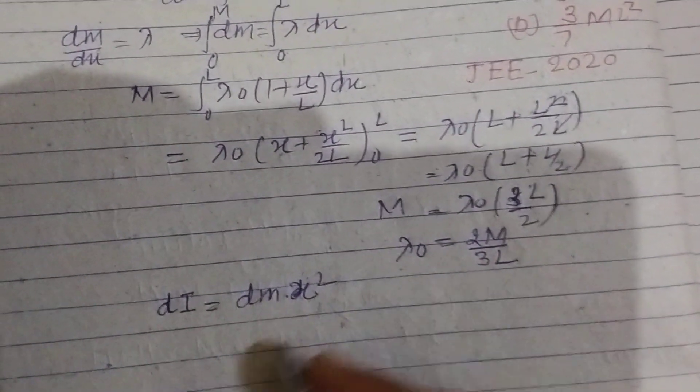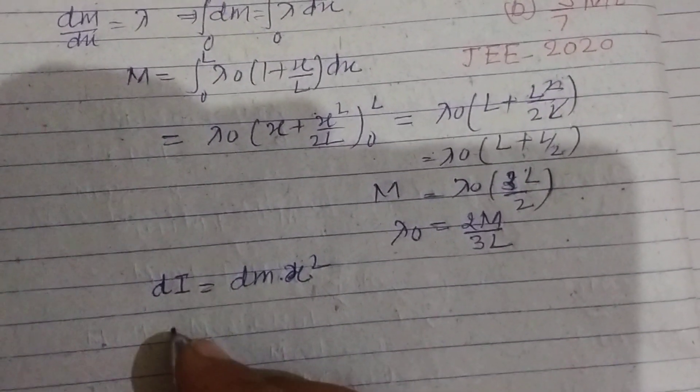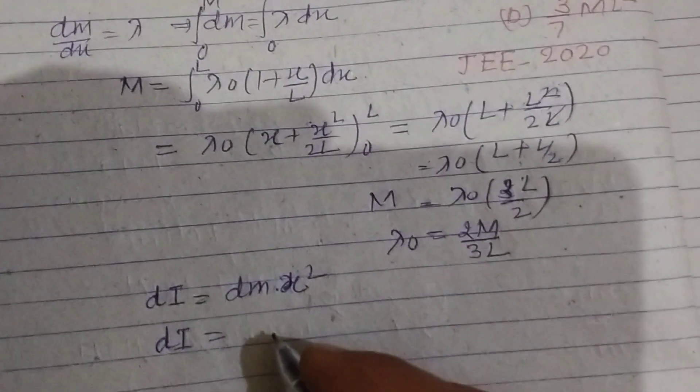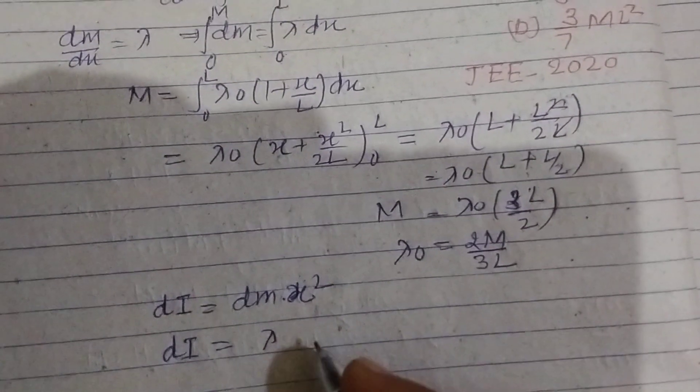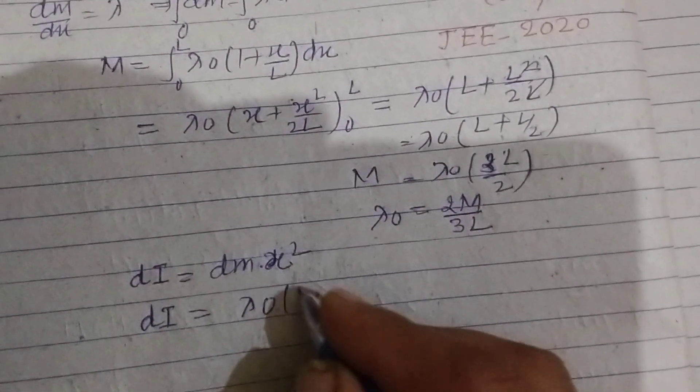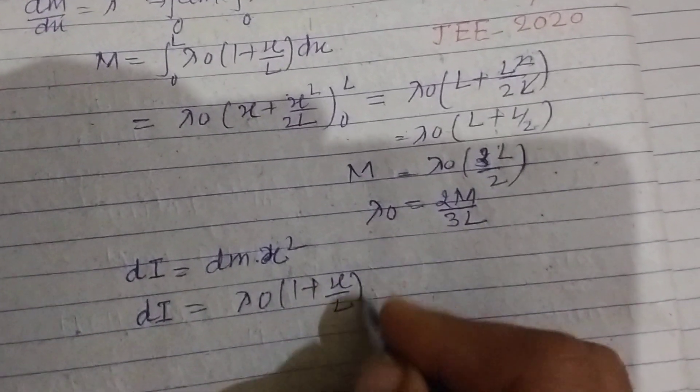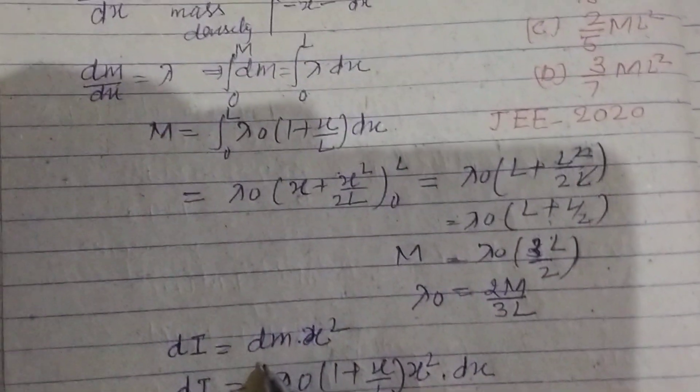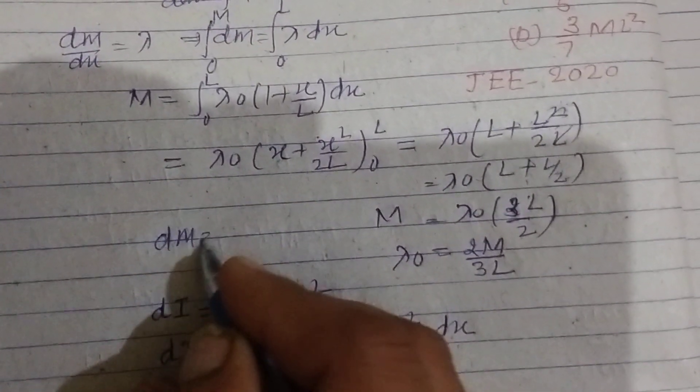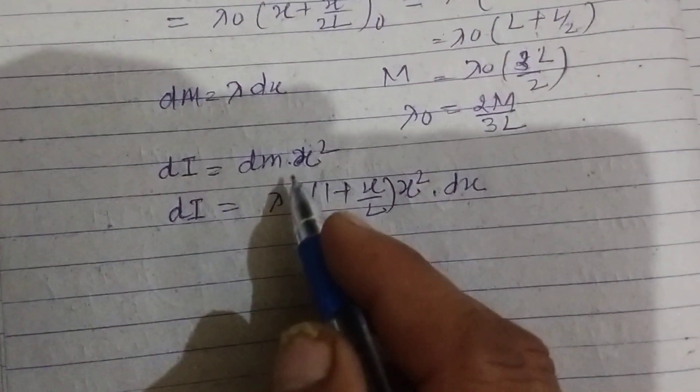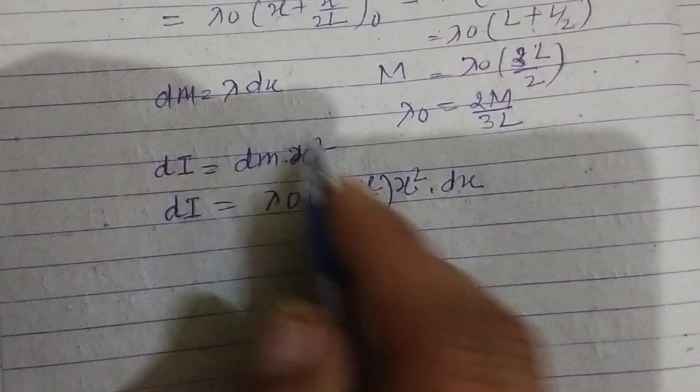Using I equal to mr square, so now dI equal to dm is what we put here, lambda naught times 1 plus x over L into x square into dx.